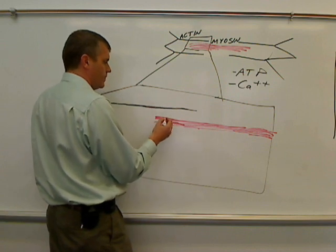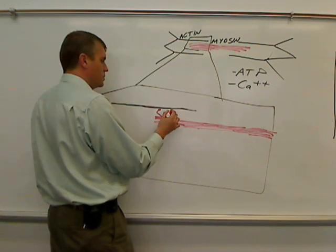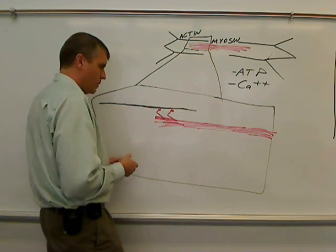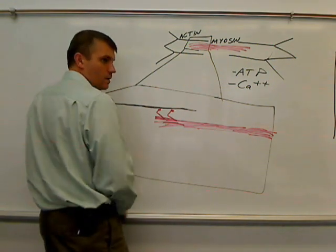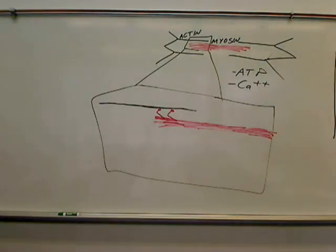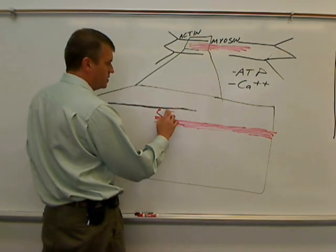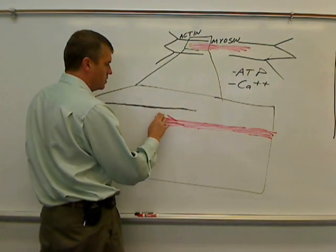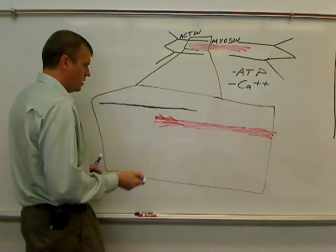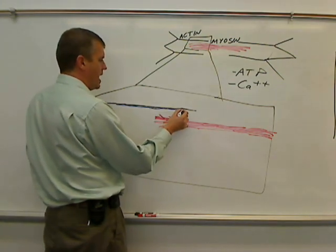The myosin filament has myosin head groups, also known as myosin cross bridges, that can connect to the actin. But, and I need another color, so I'm going for a blue marker. Before those myosin head groups can bind, before we jump to that, there's a protein complex that's on the actin.